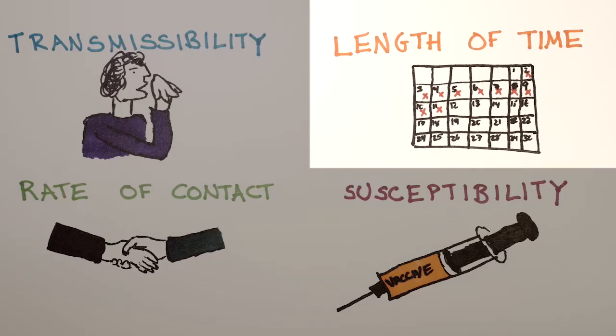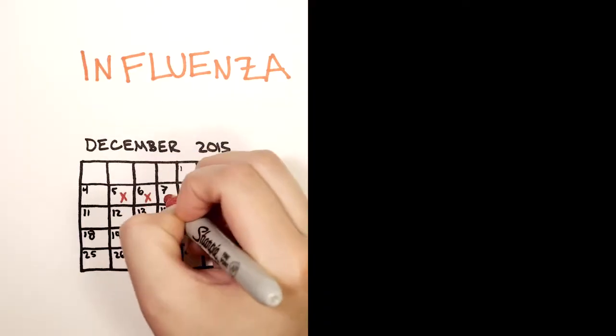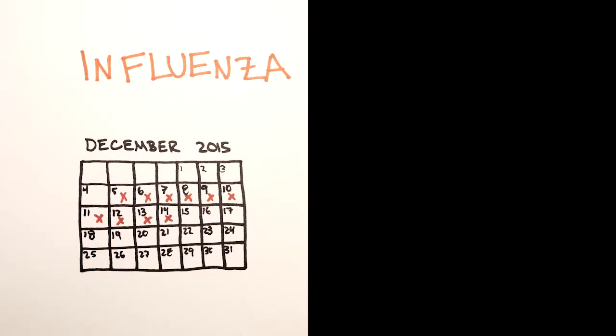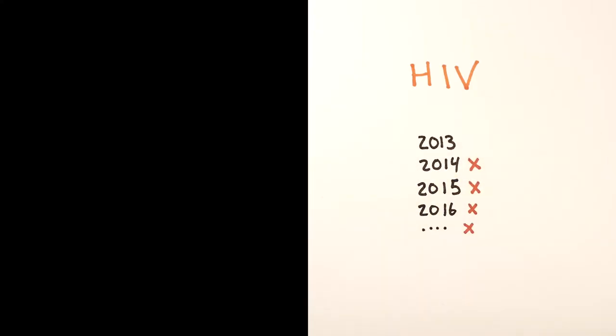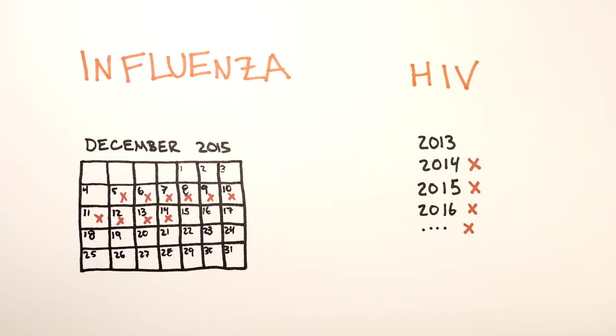The second factor is the length of time someone is infectious. It can be days or decades, depending on the pathogen. The longer someone is infectious, the more people they could spread it to.